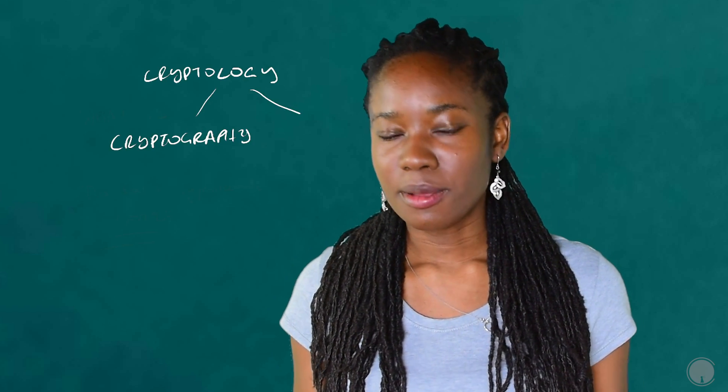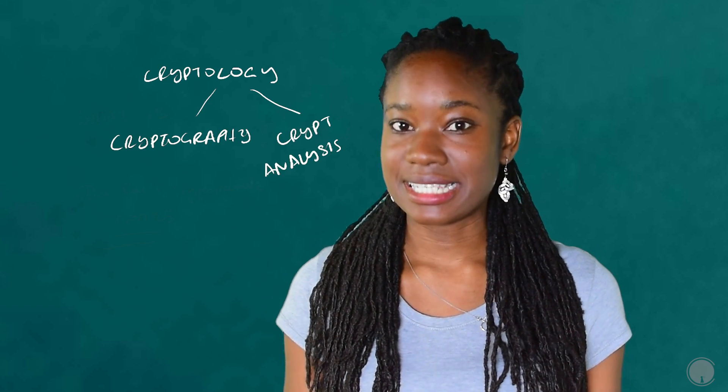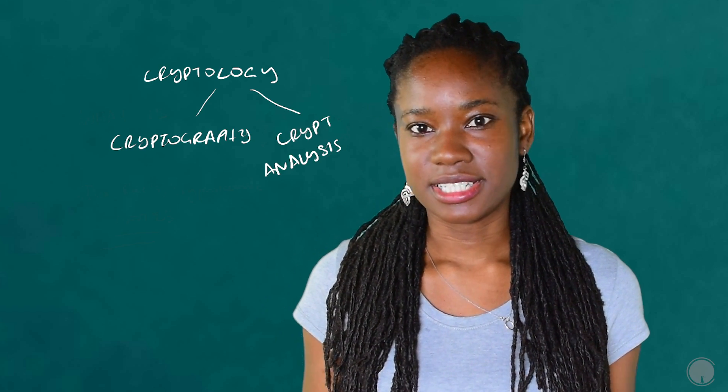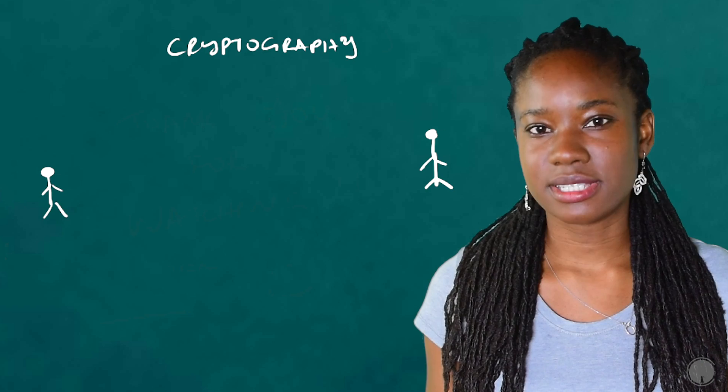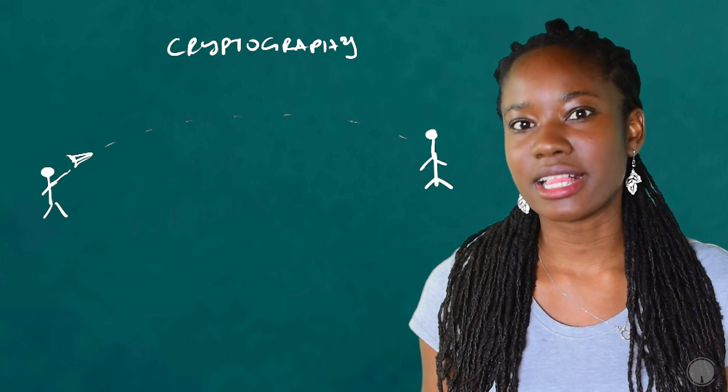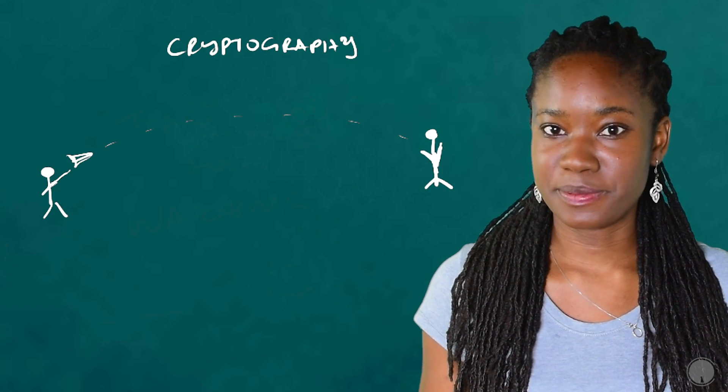Cryptography is the term most commonly used, but it's actually only one half of the equation, the other being cryptanalysis, and both coming under the term cryptology. Cryptography specifically is a process of applying a formula or algorithm to a message so that it is indecipherable to everyone except the intended recipient.